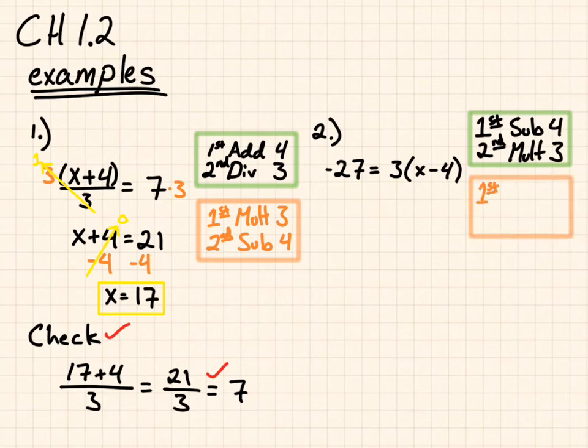So, if I'm to reverse engineer that, instead of multiplying by 3, I'm going to divide both sides by 3. 3 divided by 3 goes to 1. And I'm left with negative 9 equals x minus 4.